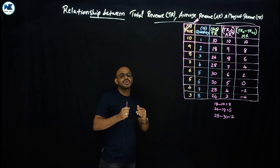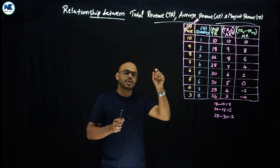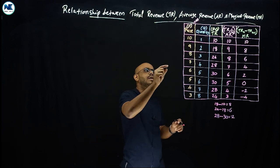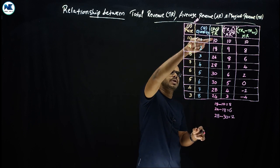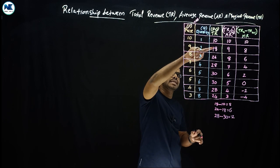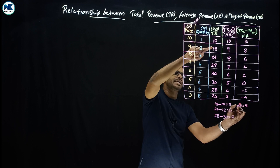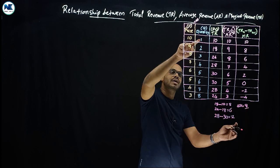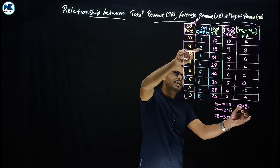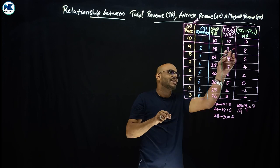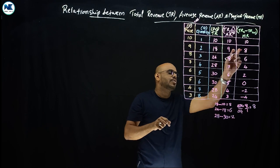We can also verify using the formula MR = change in TR divided by change in Q. For example, when TR changes from 10 to 18, the change in TR is 8 and the change in Q is 1, so MR = 8 / 1 = 8. This confirms our earlier result.